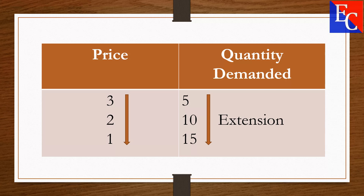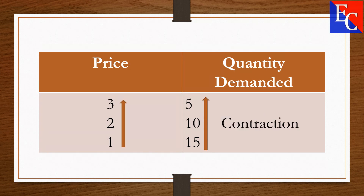According to the table, when prices decrease from 3 to 1, quantity demanded increases from 5 to 15. This is called the Extension of Demand. When prices increase from 1 to 3, quantity demanded decreases from 15 to 5. This is called the Contraction of Demand.